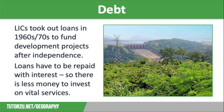However, the price of copper crashed, so Zambia had to borrow even more money just to keep the economy running. At the same time, interest rates rose rapidly, and by the end of the 1980s, Zambia's $800 million debt had risen to over $6 billion.